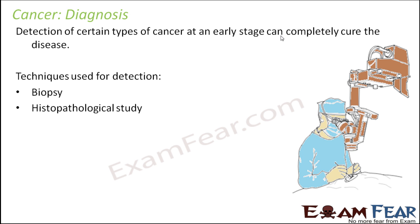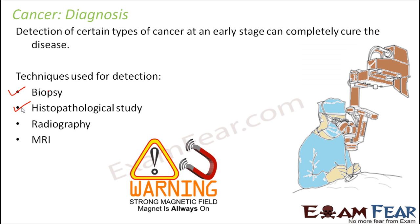Biopsy can tell if a particular tumor is malignant or benign, and then further treatment can be considered. Even before biopsy, radiography or MRI can also help — with scanning you can find if there is something inside the body. Sometimes a tumor is located deep inside and you can't feel it externally, so MRI or radiography can confirm that a tumor exists. Once its location is known, a biopsy is performed where a small portion of tissue is taken out and histopathological studies are done to check whether it is cancerous or not, whether it is benign or malignant. This is how the diagnosis procedure takes place.